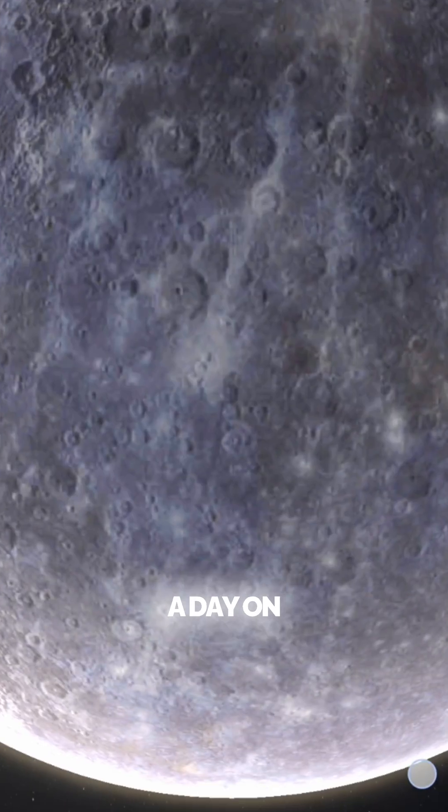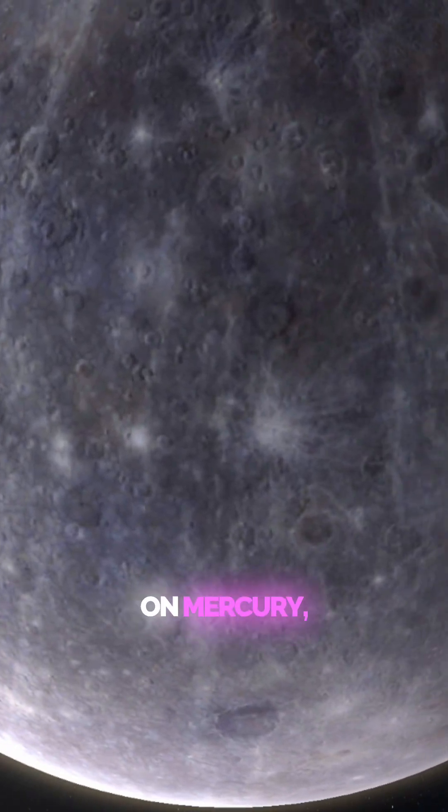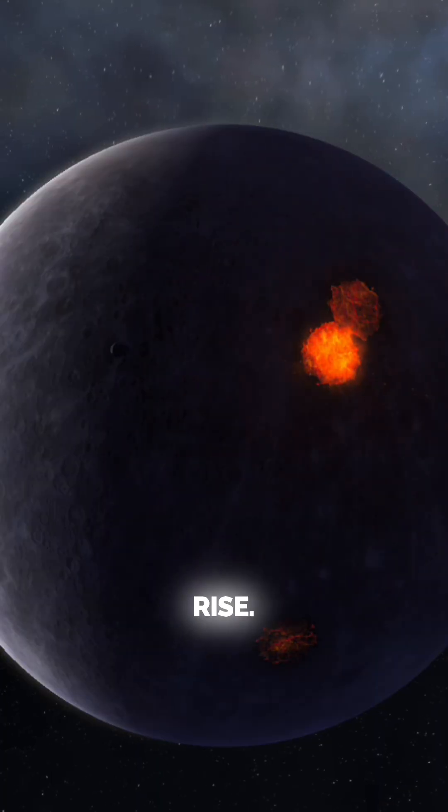2. A day on Mercury is longer than a year. Here's a wild fact. A single day on Mercury, sunrise to sunrise, lasts 176 Earth days, which is twice as long as its year. Imagine spending six months waiting for the Sun to rise.